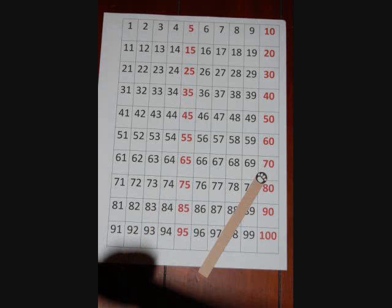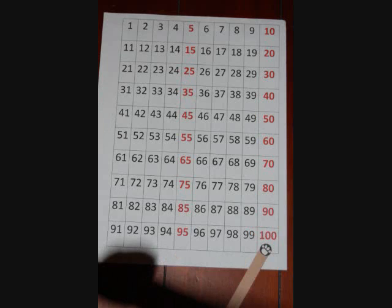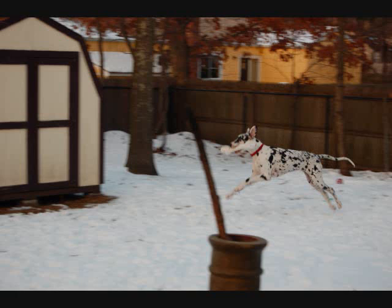seventy, seventy-five, eighty, eighty-five, ninety, ninety-five, one hundred — that's the way we learn to count to one hundred by fives.